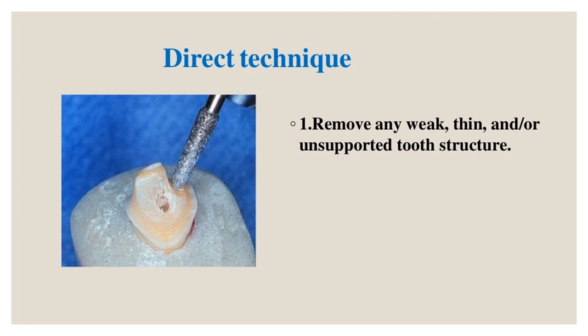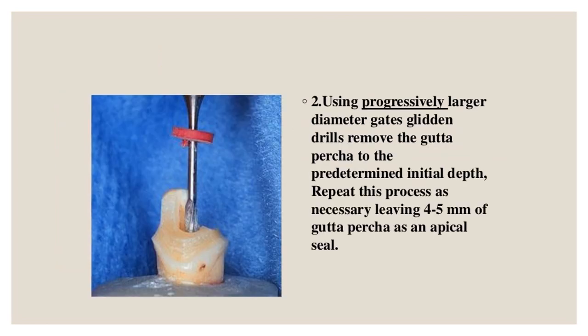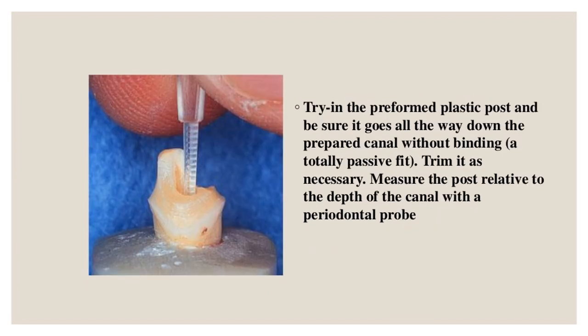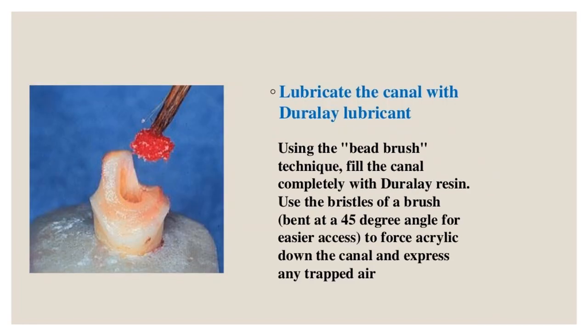Direct technique: first, remove any weak, thin, and/or unsupported tooth structure. Using progressively larger diameter Gates Glidden drills, remove gutta-percha to the predetermined depth, leaving 4 to 5 millimeters of gutta-percha as an apical seal. Try in the preformed plastic post and ensure it goes all the way down the prepared canal without binding — a totally passive fit. Trim as necessary and measure post depth relative to the canal with a periodontal probe.